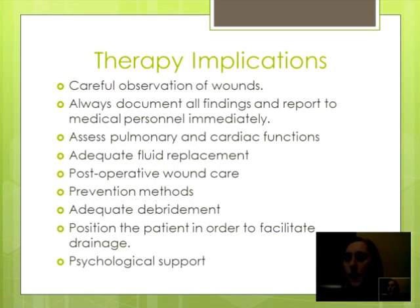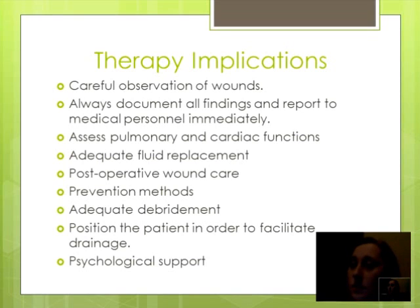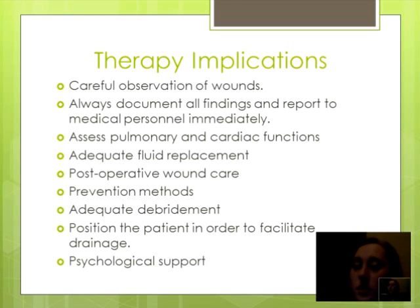Early diagnosis of gas gangrene can be a result of careful observation of wounds. One should look for signs of tissue death, ischemia, any signs of discoloration, severe pain, sudden edema, and sudden loss of pulse in the involved limb. Always document all findings and report to the appropriate medical personnel immediately. Adequate fluid replacement is also necessary during this time, and it is important to assess all pulmonary and cardiac functions. Post-operative wound care as well as special wound care to prevent further skin breakdown is vital. Prevention will reduce the ability of clostridia to grow and reproduce. Adequate debridement is necessary to reduce the anaerobic growth conditions. If any devitalized tissue is found, notify the doctor immediately. Another important concept in wound care is to position the patient in order to facilitate drainage.